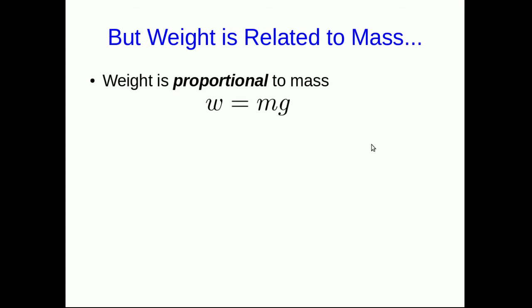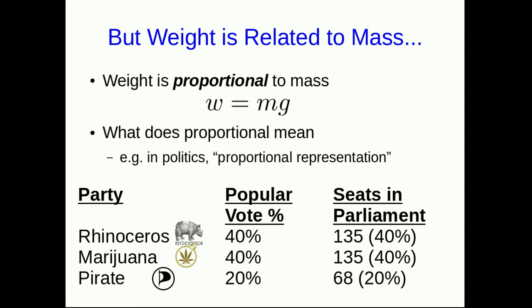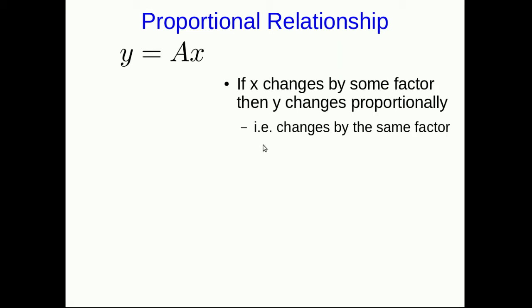But part of the reason for the confusion is probably that weight and mass are closely related to each other. It turns out that weight is proportional to mass. So we calculate a weight w from a mass by mg. We should discuss what proportional means. If you're aware of politics, you will have heard of this idea of proportional representation. And it simply means that you take the percentage of the popular vote, and you assign each party a number of seats in parliament proportional to its percentage of the popular vote. If they get 40% of the popular vote, they get 40% of the seats.